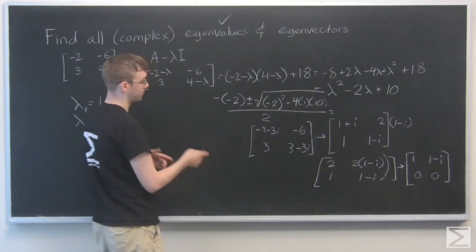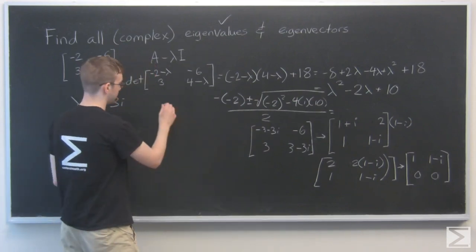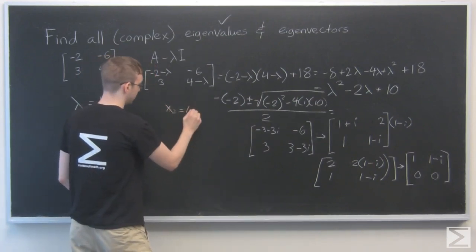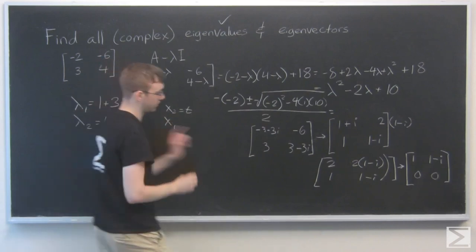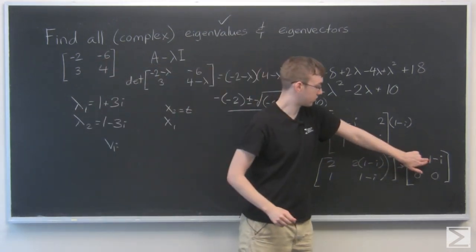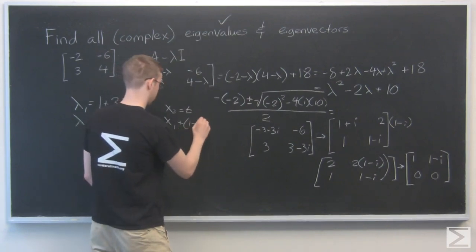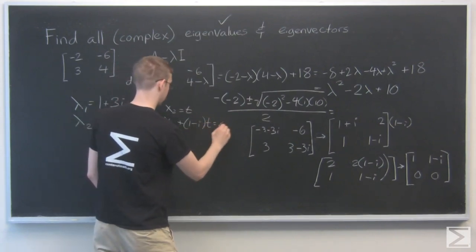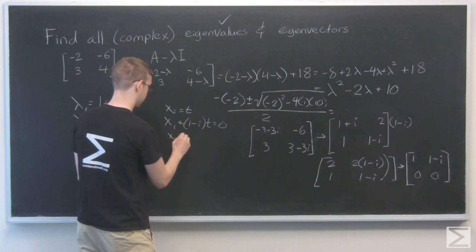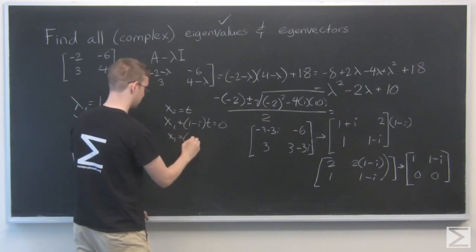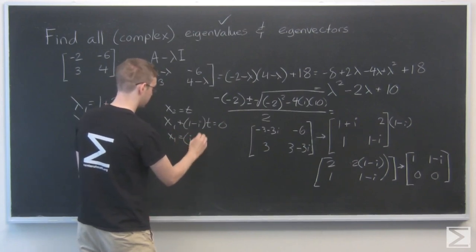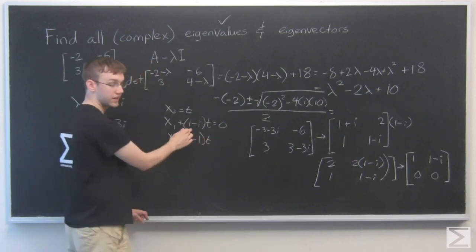OK. So our vector x1, x2, we're going to say x2 equal to t, and x1 plus 1 minus i times t equals 0. So x1 is equal to i minus 1t. I just multiplied this by negative 1.